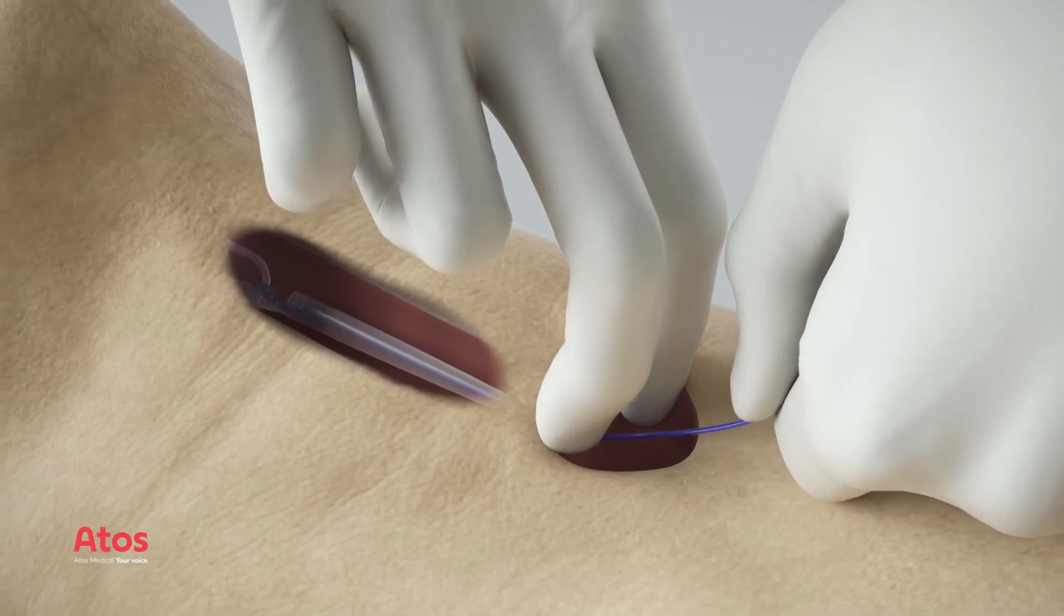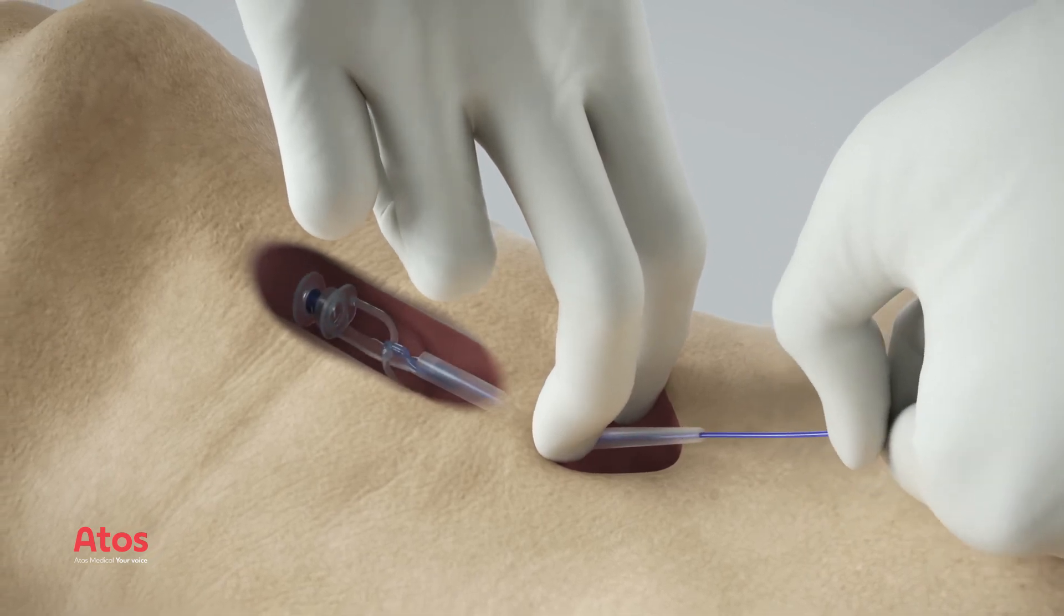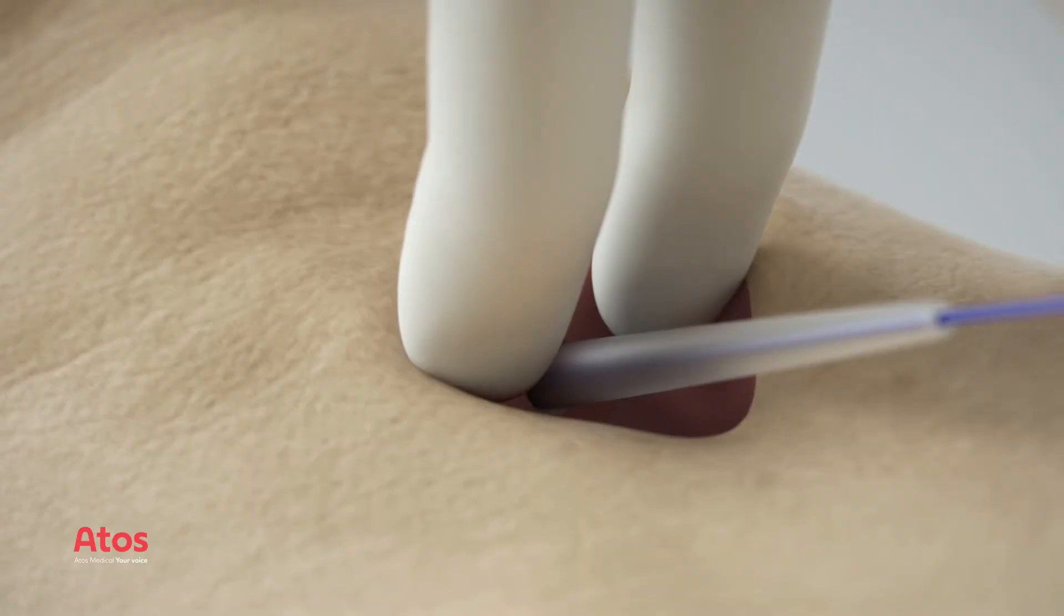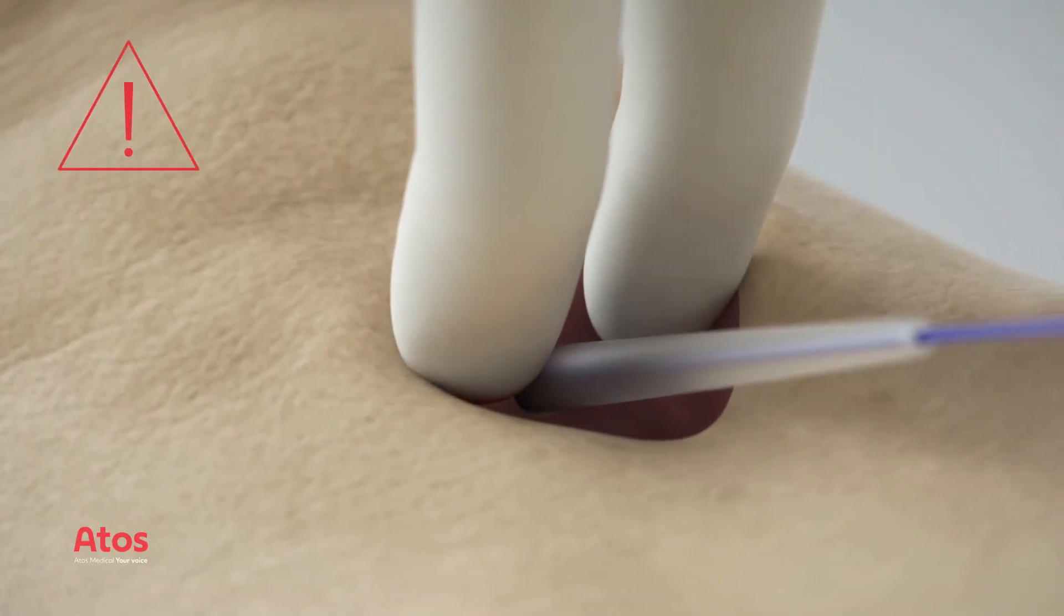Dilate the puncture site by carefully pulling the guide wire until the dilator has passed the puncture site. During dilatation, support the TE tissue to reduce dilatation force.